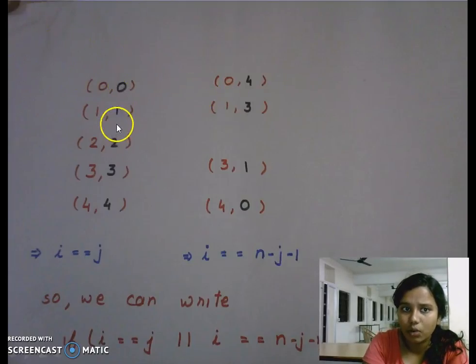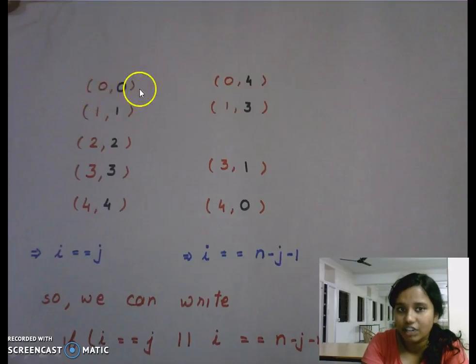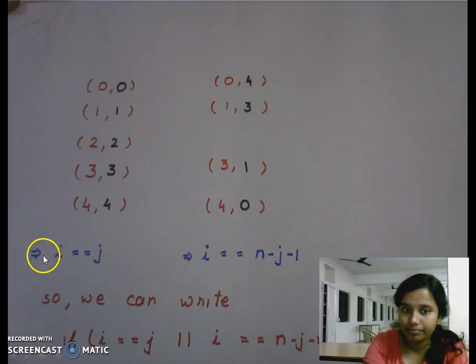So what is the similarity in this first block? I have seen that 0, 0, 1, 1, 2, 2. I have seen that i and j are equal. I mean the row and column are equal. So I say i equal to equal to j. This is the condition that can be applicable for all of these.